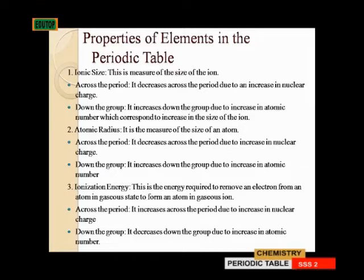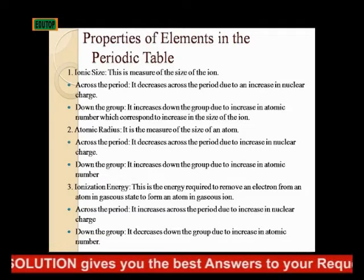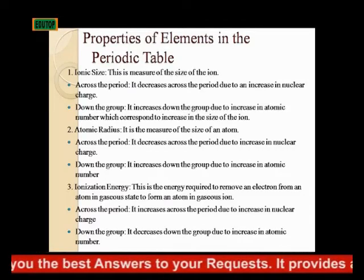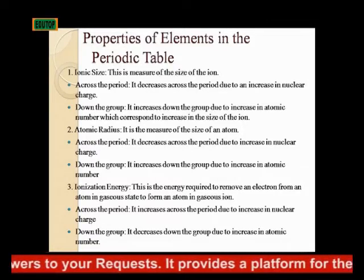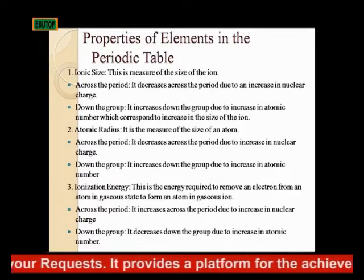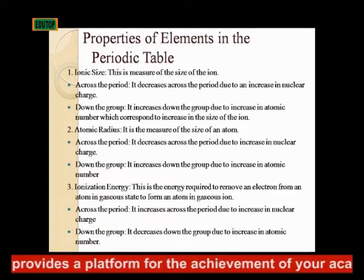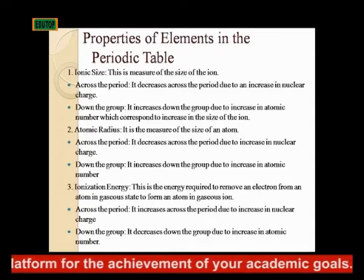Across the period, a similar trend occurs. Electrons are being added, and as you add electrons you are also adding protons simultaneously. As protons are added to the nucleus, the nucleus becomes bigger, and the distance between the valence electron and the nucleus becomes shorter. So atomic radius decreases across the period due to increase in nuclear charge.